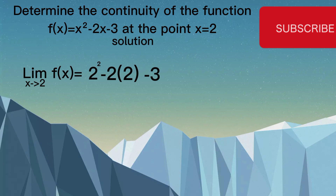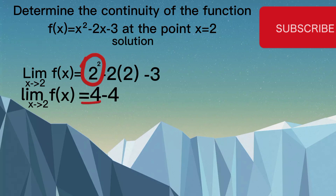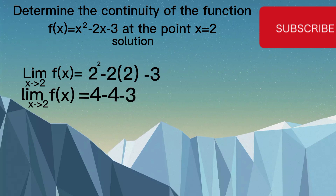So the answer is: limit as x approaches 2 of f(x) = 4 − 4. That is, 2 raised to the power 2 is 4, minus 2 times 2 is 4, minus 3. So our answer is −3.